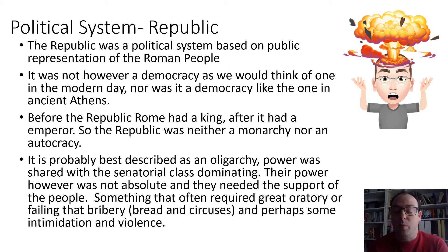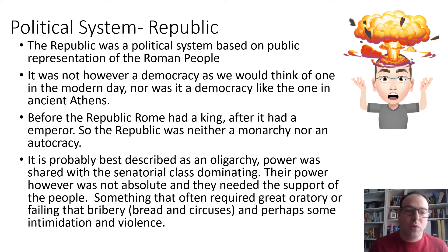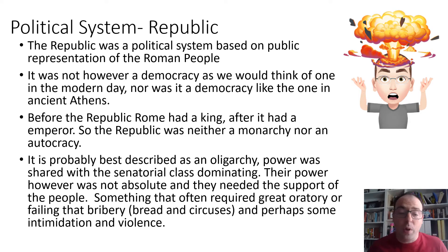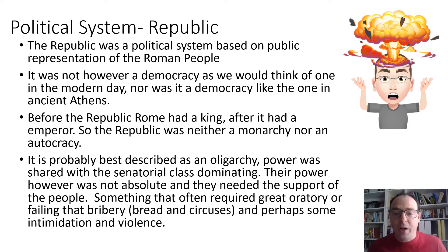The political system in Rome in the late Republic was a republic system, based on the idea of public representation of the Roman people. It wasn't democracy as we would think of it in modern day, nor as we would think of it in ancient Athens. Before the Roman Republic, Rome had a king, and after it had an emperor. So the Republic is neither a monarchy nor an autocracy. What probably best describes it is an oligarchy, where power was shared within the senatorial class who dominated the late Republic and control of Rome.